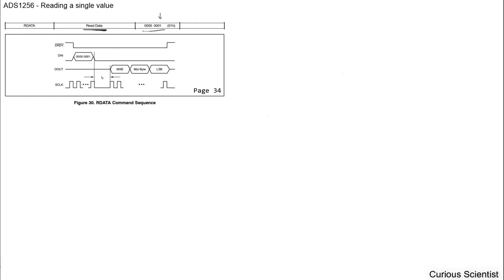Based on the previous video, first we write the multiplexer register in order to select some input - we want to select the pins we will use for measuring. That should be step zero: select the multiplexer. That is done using the write register command shown in the previous video - not a unique function for this kind of device, but a function I implemented in Arduino.